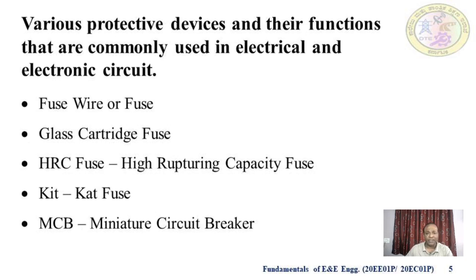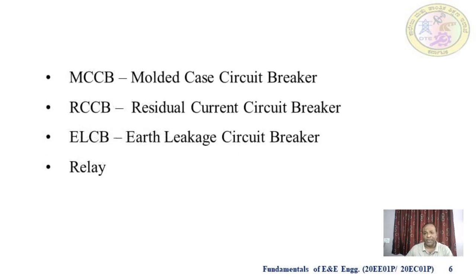Here are some various protective devices commonly used in electrical and electronic circuits: fuse wire or a fuse, glass cartridge fuse, HRC fuse (high rupturing capacity fuse), kit-cat fuse, MCB (miniature circuit breaker), MCCB (molded case circuit breaker), RCCB (residual current circuit breaker), ELCB (earth leakage circuit breaker), and finally relay.